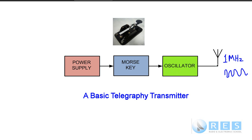They would just see a deflection of the signal meter on their receiver and that would be all. But suppose we just add one more device — suppose we add a telegraphy key, a Morse key, into this position. Now we've got the ability to turn the oscillator on and off. So if we pre-arrange a code with another operator, we could turn the key on and off and send messages. And of course the code we use is Morse code, a universal international code. By operating the Morse key in the right pattern of ons and offs, we can transmit a plain English message or any other message to another station. That's a basic telegraphy transmitter.